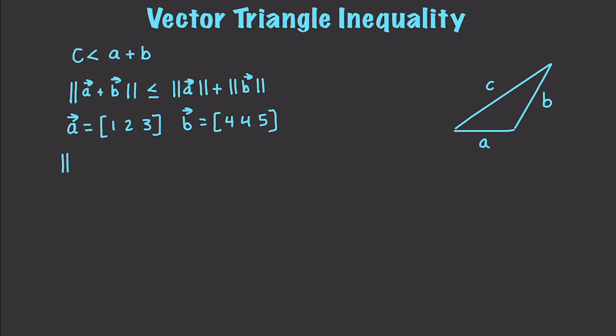Well, we would have to first go in here and find the magnitude of A, which would be equal to 1 squared plus 2 squared plus 3 squared, and we'd have to get the square root of that, which would end up being the square root of 14. Again, this is going to be 4 squared plus 4 squared plus 5 squared, and the square root of that is going to end up being the square root of 57.